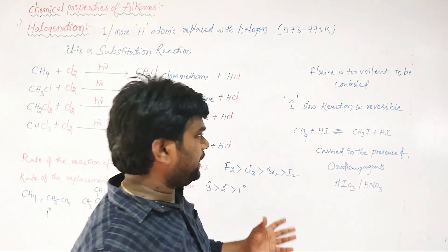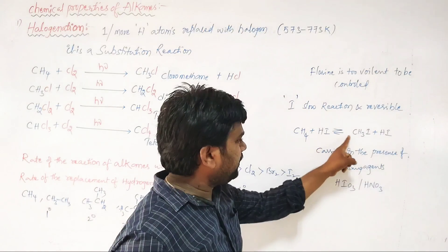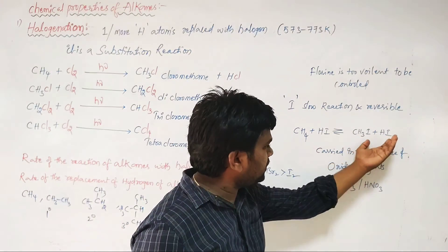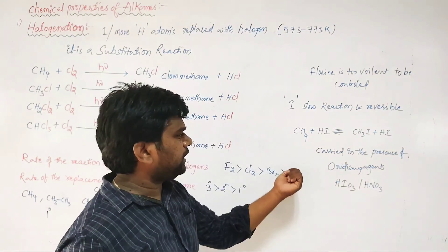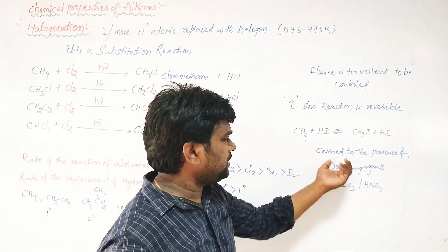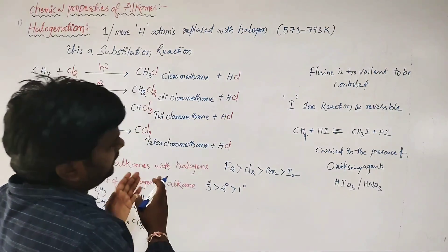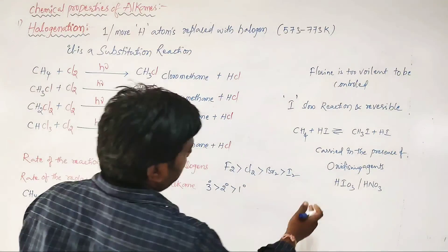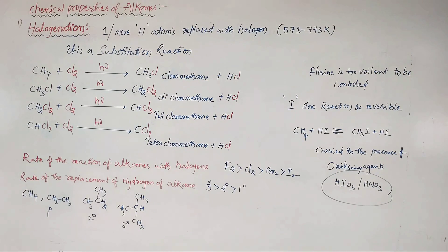Fluorine reacts too violently to be controlled. Iodine reacts very slowly and the reaction is reversible: CH4 + I2 ⇌ CH3I + HI. To drive the forward reaction, oxidizing agents such as HIO3 or HNO3 are used to increase the rate. This completes the discussion of halogenation, a key substitution reaction of alkanes.